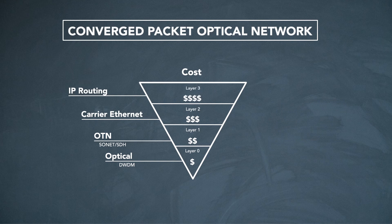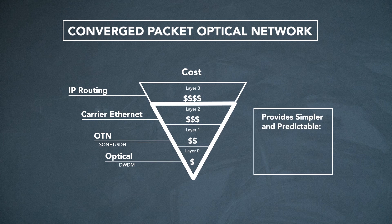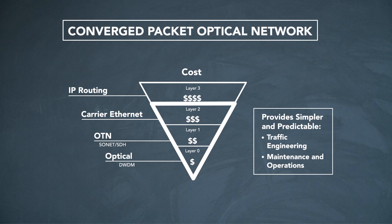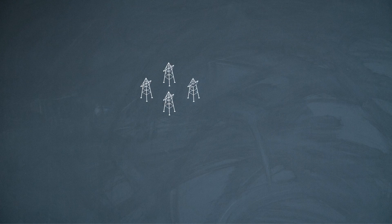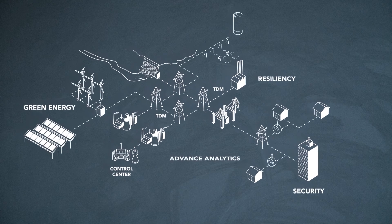So unlike IP MPLS, which routes IP at layer three, packet optical provides simpler and more predictable traffic engineering, maintenance, and operations. And where this pays off is in providing a very smooth transition from legacy to next generation networks.